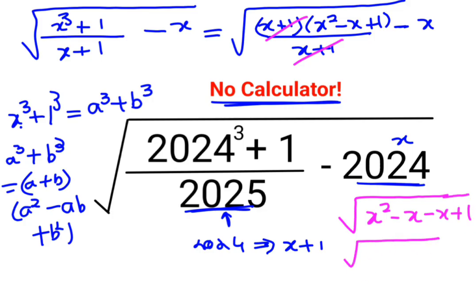X square minus 2X plus 1, which is basically the expansion of X minus 1 the whole square. So the square and the root can get cancelled, so basically the answer for this is...